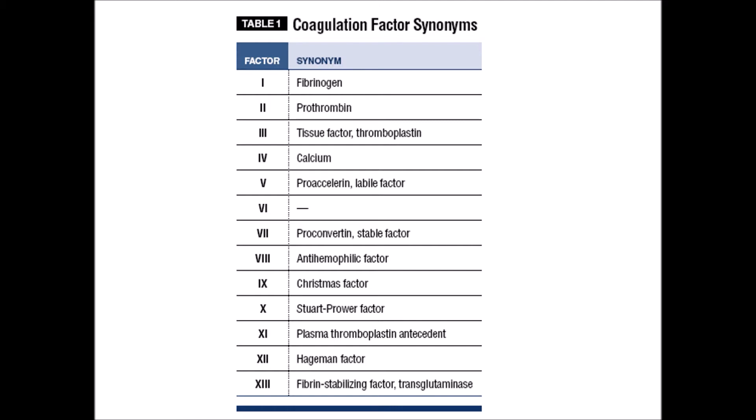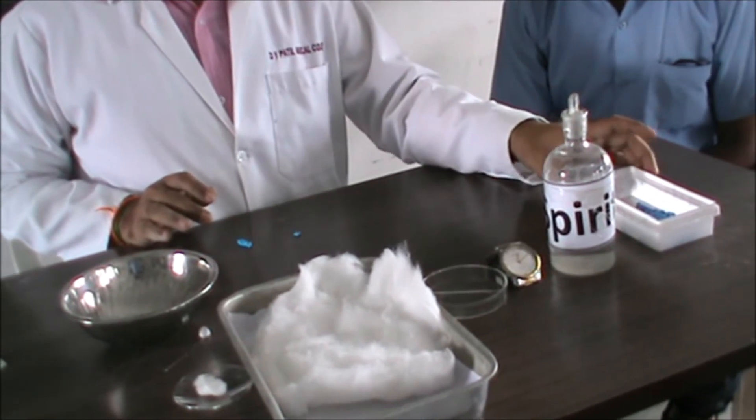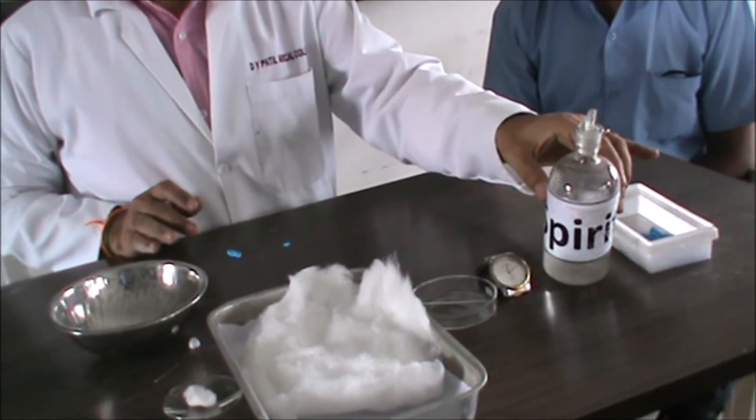Factor 9 is Christmas factor, 10 is Stuart-Prower factor, 11 is plasma thromboplastin antecedent, 12 is Hageman factor, and 13 is fibrin stabilizing factor. Note that certain factors have alternative names — it is up to you which one you remember and answer. The requirements for clotting time are: spirit, cotton, watch glass, capillary tubes, lancet, and petri dish.